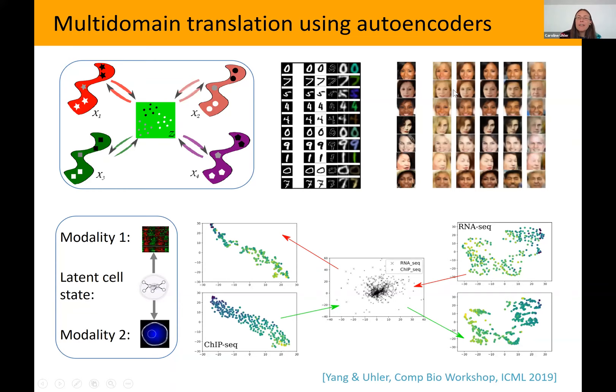This additional loss term forces the two distributions to be the same in the latent space. Then, by concatenating two functions, we can go from imaging to RNA-seq at the single-cell level. We did this for RNA-seq and ChIP-seq and also for imaging. To make it easier to see what's happening, let me show an example with different image modalities.